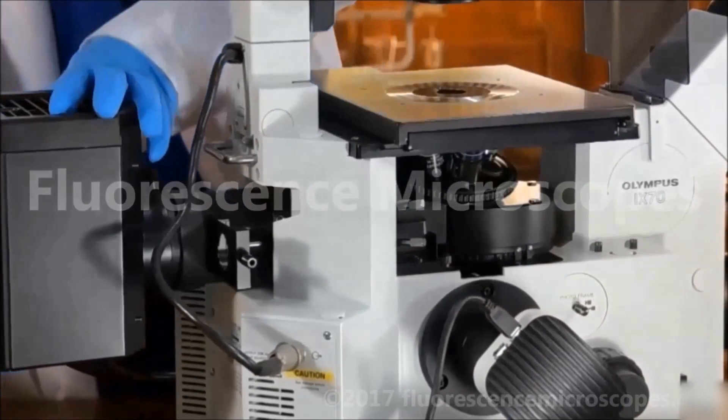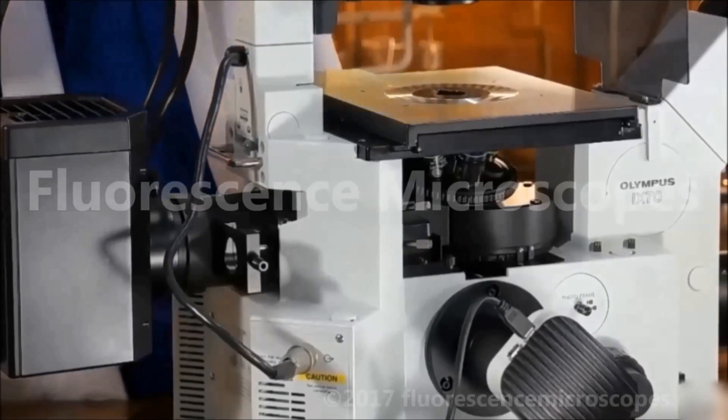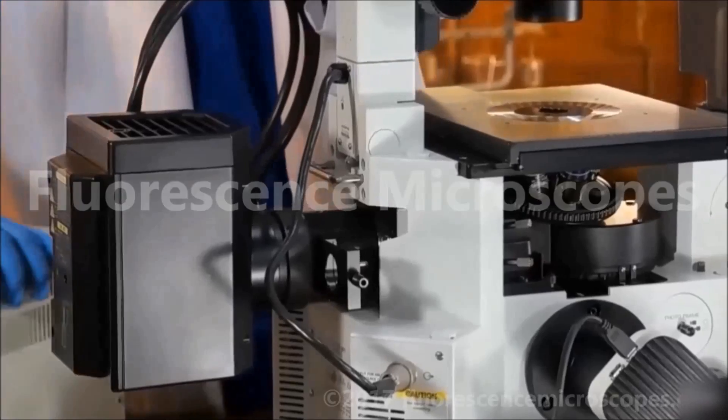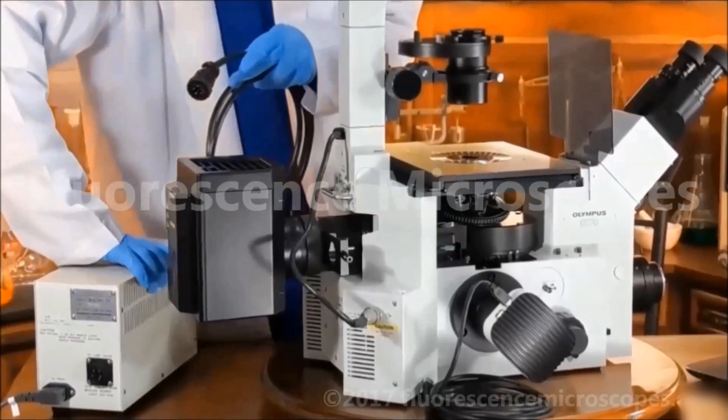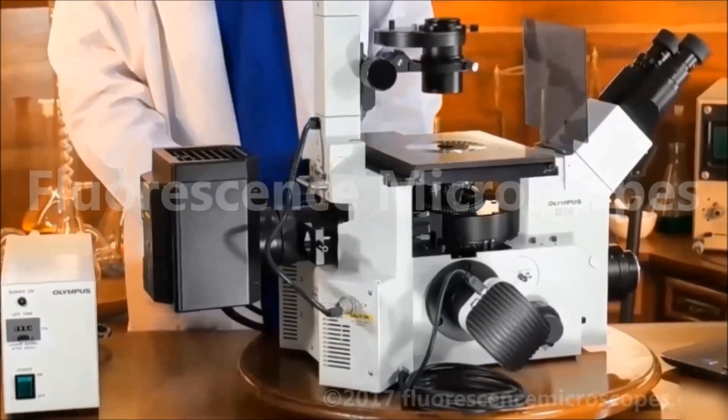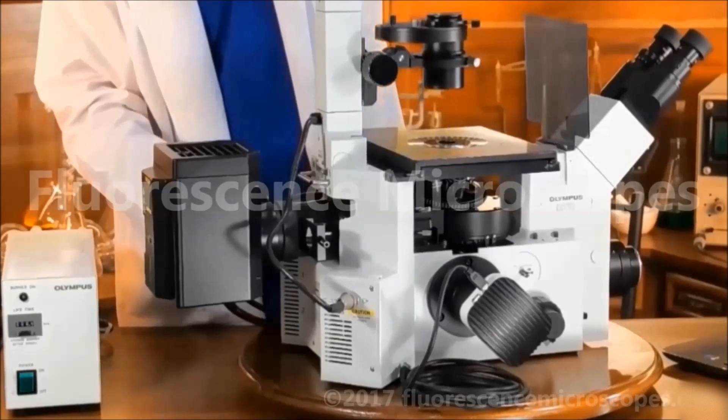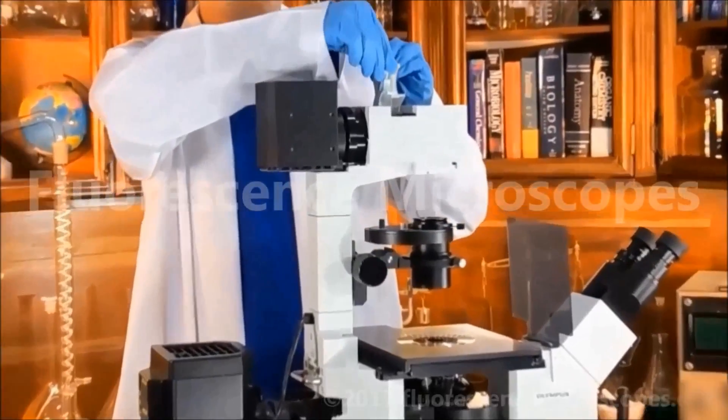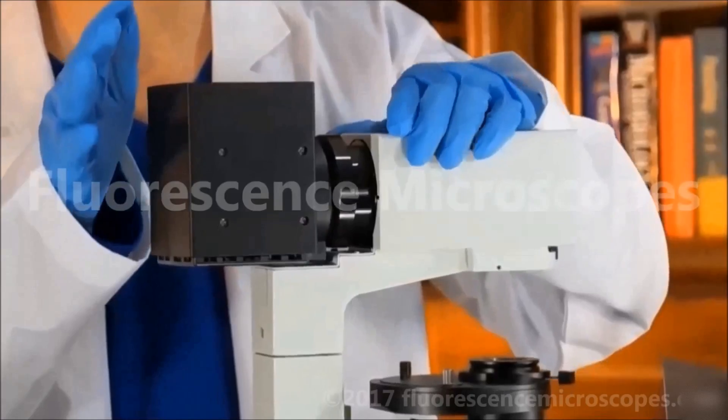This mercury lamp housing is connected to the power supply by this cable. Here's the connection. We have some filters. Light balancing daylight filter plus a frosted filter included for the halogen.